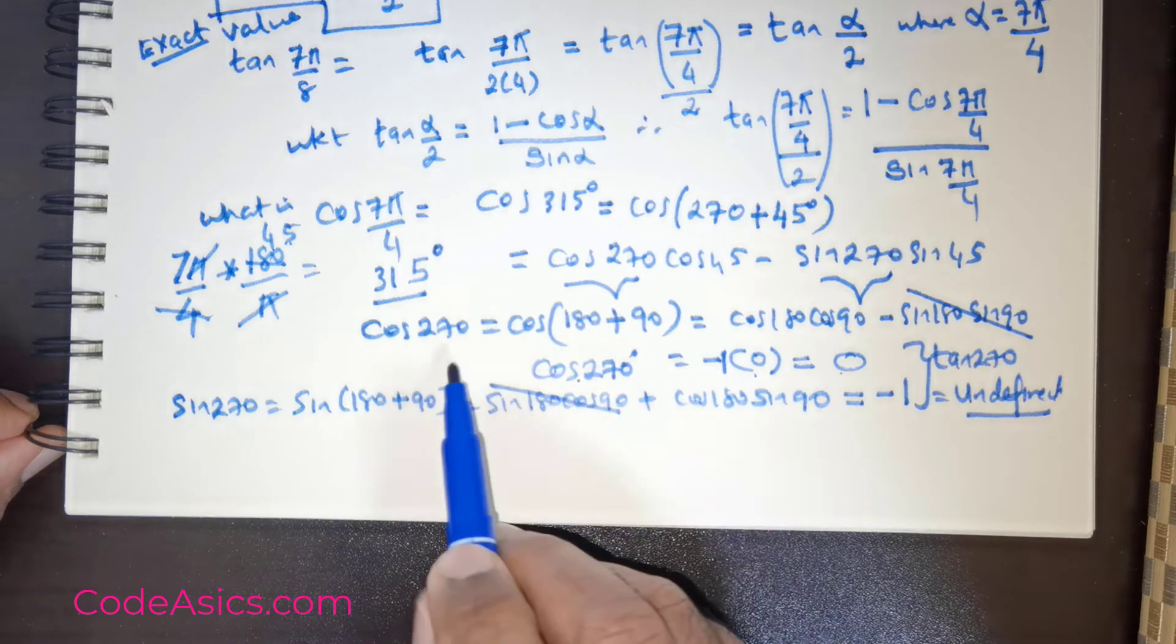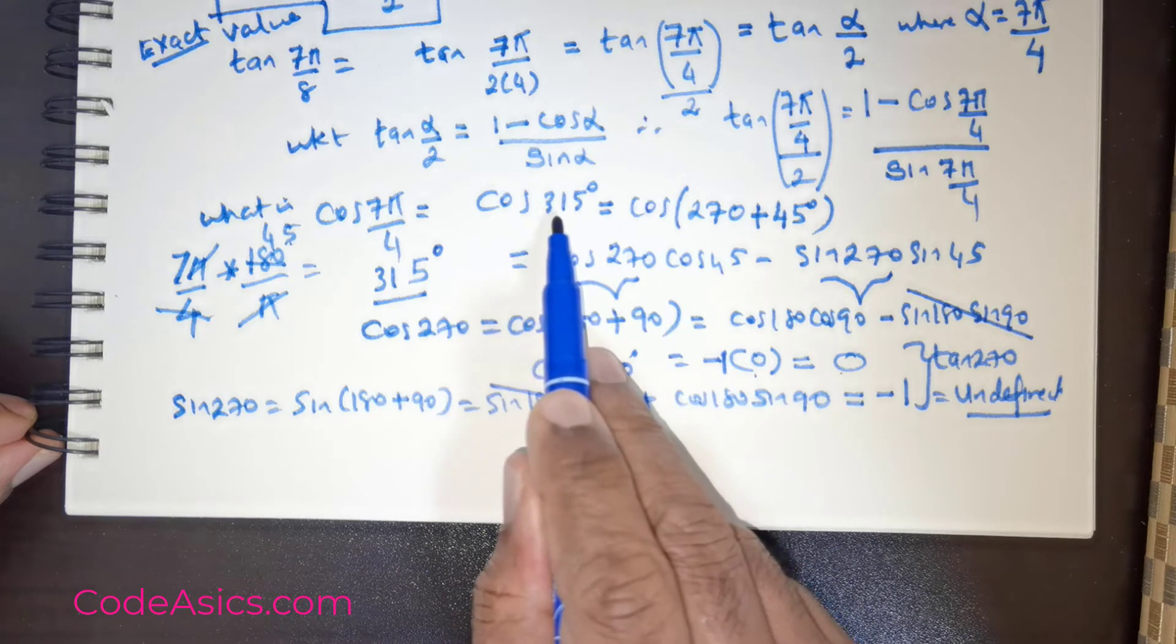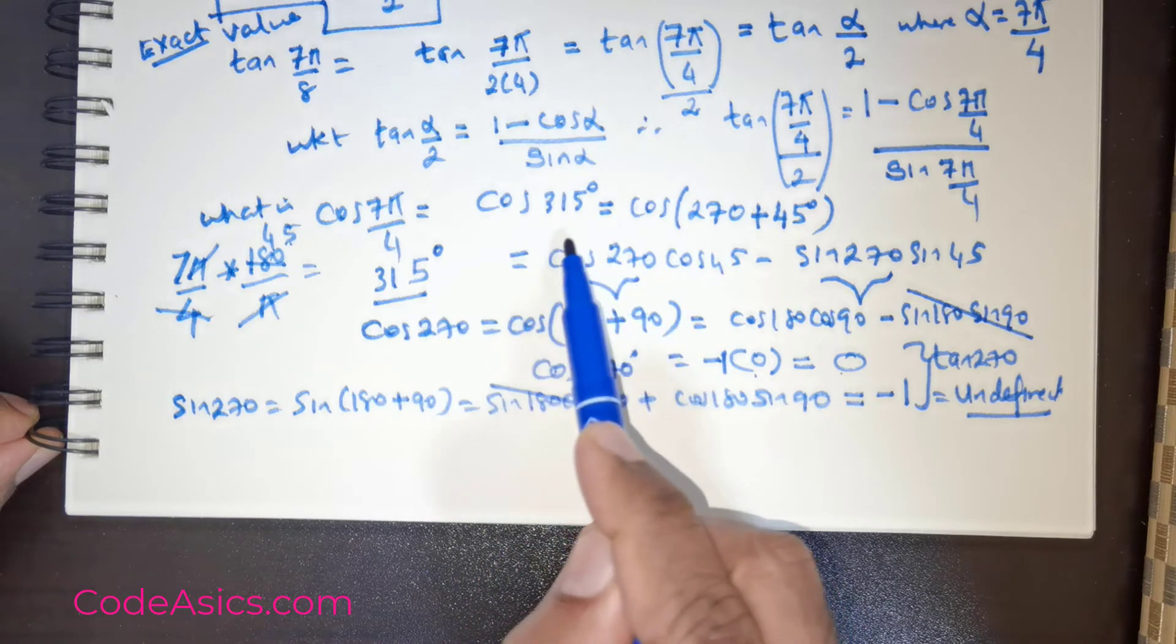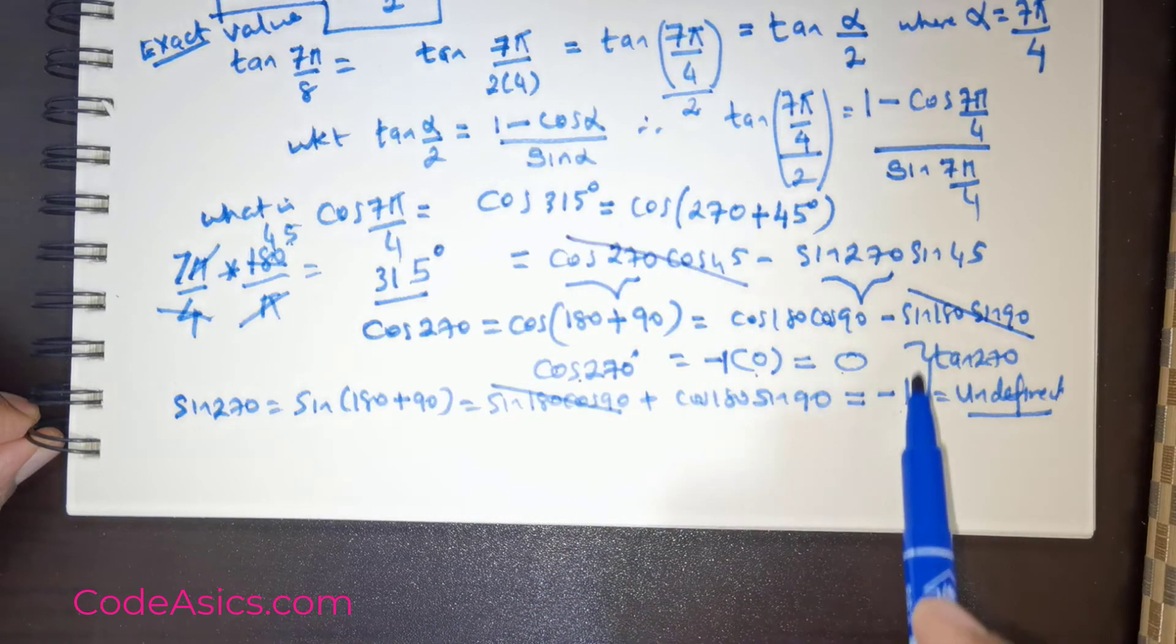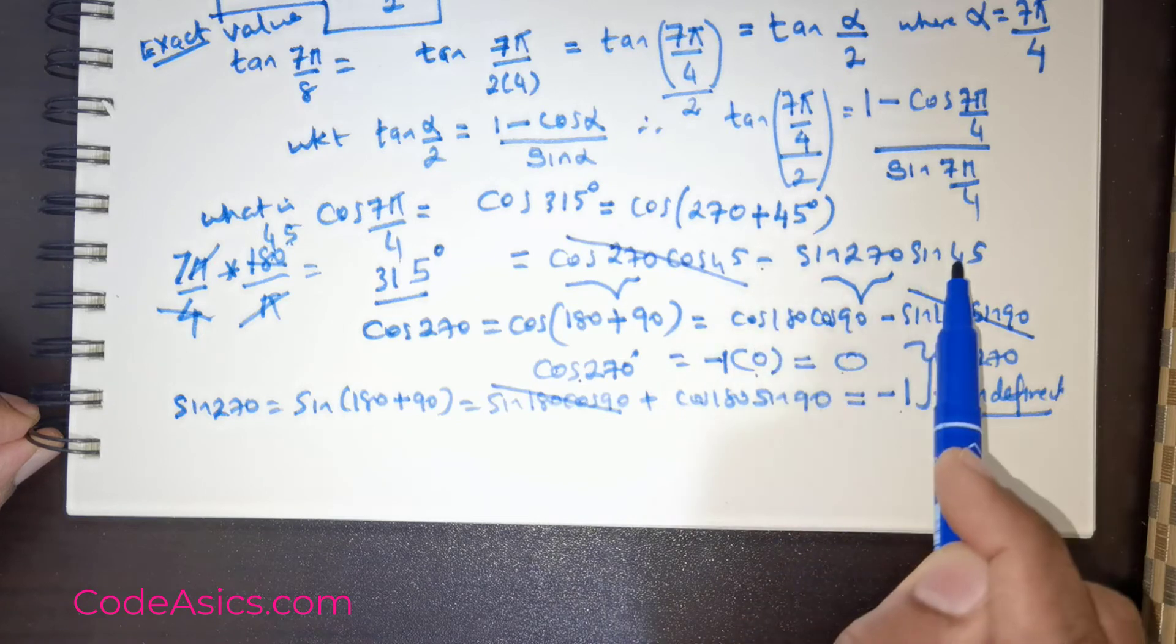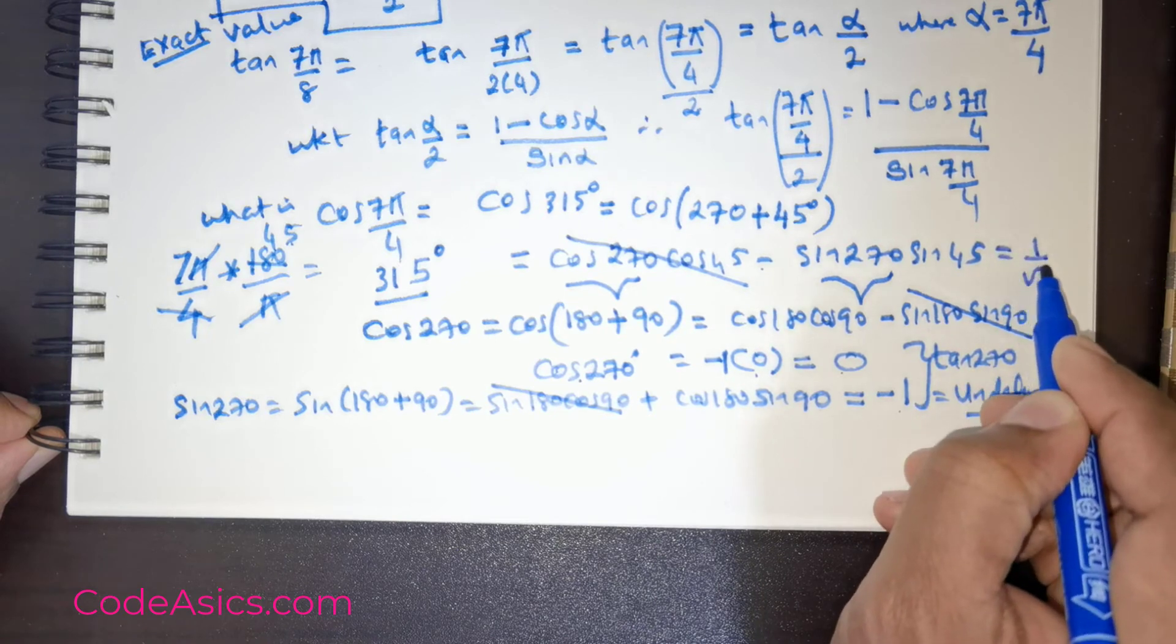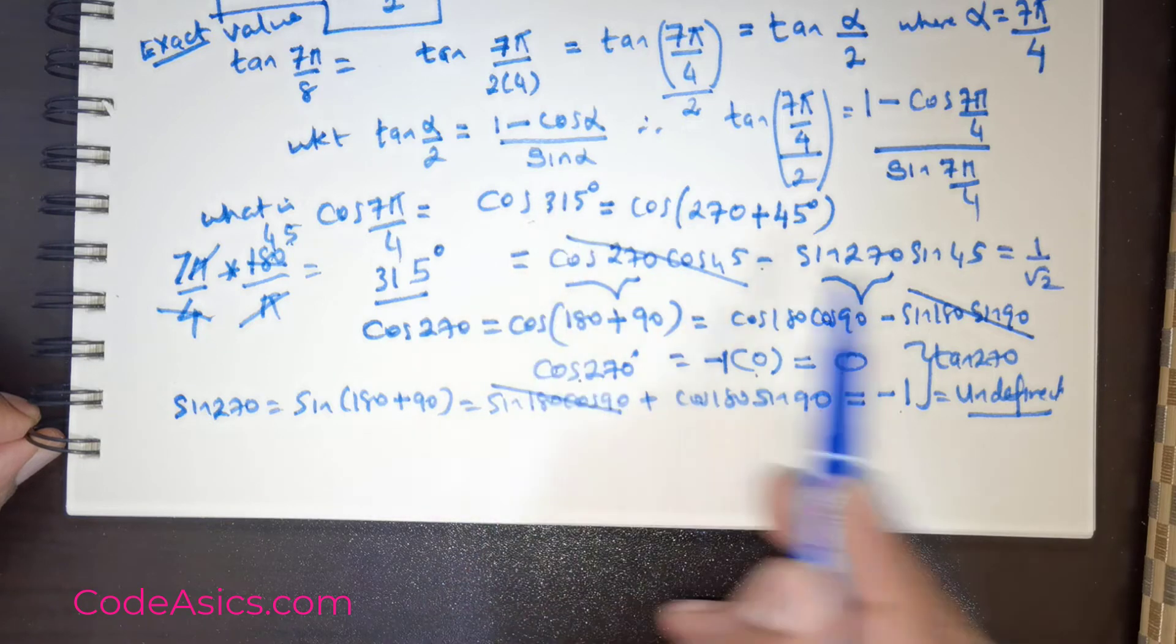Now having extracted the value for cos 270, sin 270, it's time for us to get the value of cos 315. As I mentioned, cos 270 is 0, so this goes off. Sin 270 produces negative 1 and you got a negative 1 here. Apparently sin 45 is 1 over root 2. So the outcome is positive 1 over root 2. This is the value for cos 315 degrees.